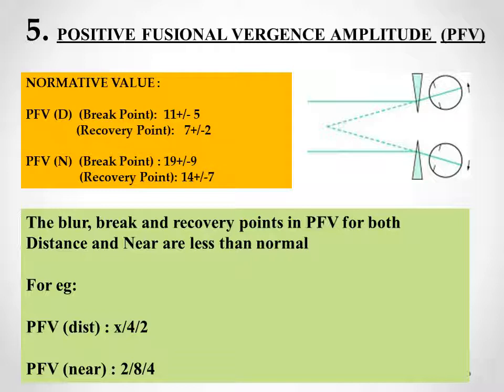The normal PFV values at distance are: break point 11 prism diopter base-out (SD ±5) and recovery 7 prism diopter base-out (SD ±2). For near, the break point is 19 prism diopter base-out (SD ±9) and recovery is 14 prism diopter base-out (SD ±7). These values are from Scheiman and Wick, though they may vary slightly across literature.